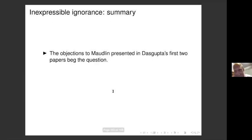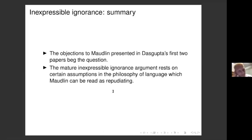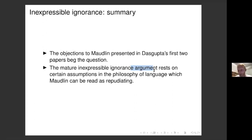By contrast, if Maudlin accepts a descriptivist account of indexicals his epistemological argument falters — given that all absolute places are qualitatively identical, spatial indexicals would be insufficient to diffuse the challenge of the static shift. Overall, our second reading of Maudlin has two key inputs: liberalism about reference and singular thought, and a Kaplanian account of indexicals. If he endorses these, it seems Maudlin can maintain that there's no inexpressible ignorance in the case of the static shift, contra Dasgupta.